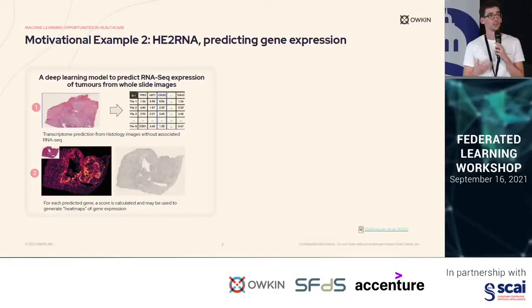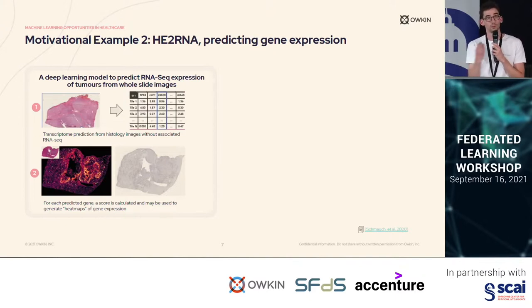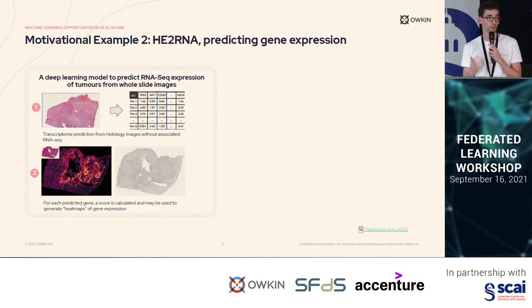Another example is H2 RNA, which is a neural network trained on slides or images of tissues to predict the gene expression of the tumor. This machine learning model was able to infer the genotype from phenotype information — that is, just what is observable from the image.